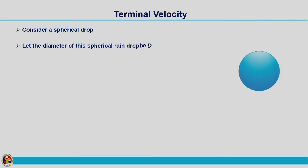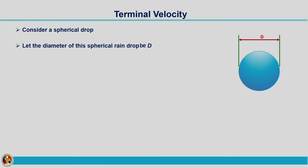Consider a spherical drop and let the diameter of the spherical drop be d. Now let us see what are the different forces acting on the raindrop, because of which the drop is falling down. The first one is the gravity force. Due to gravity force, the weight of the drop acts in the downward direction. So gravity force is mainly due to the weight of the raindrop.